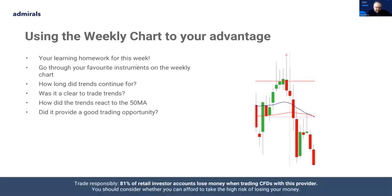We've got a little time and I want to switch across to the live charts. Here's some homework for you all: go through your favorite instruments on the weekly chart. How long did the trends continue for? Were they six weeks or six months? Were the trends clear? Could you have found ways to join them based on the elements we've covered in previous sessions?